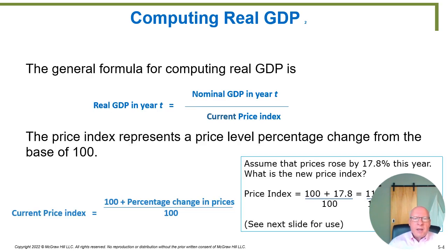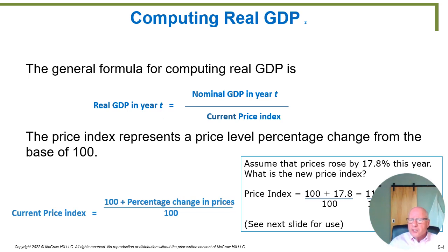Let's go through an example. Here's our general formula for computing real GDP. Real GDP in year T — where T stands for time, some time period — will be whatever year you're interested in. So year T can be 1990, it can be 1995, whatever year you're trying to figure out information for is year T by definition. You need to fill in what that actual number is depending on what year you're interested in.